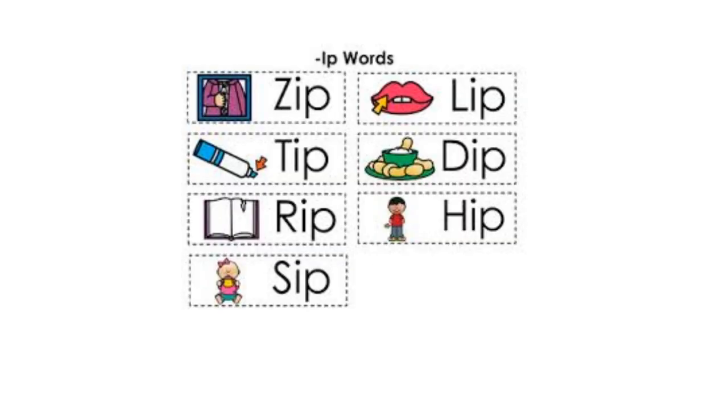Now let's take a look at the -ip words. The first one: Z-I-P, zip. This one: L-I-P, lip. This part of the marker, what do we call it? T-I-P, tip.